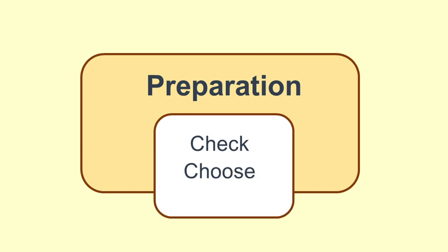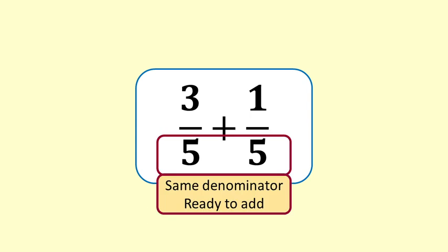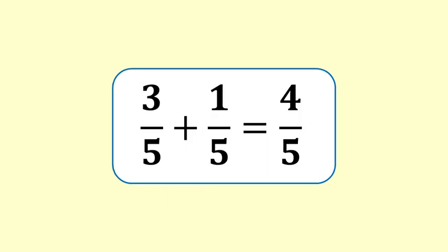Choose a denominator compatible to both fractions. Convert — express each fraction using the common denominator. Example: 3 fifths plus 1 fifth. 3 fifths and 1 fifth have the same unit, fifths — they both have 5 as a denominator. We can add: 3 fifths plus 1 fifth equals 4 fifths.